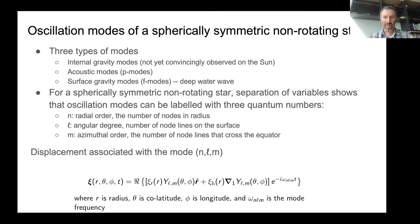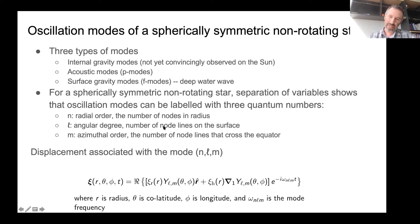If you go through the math, you find that oscillation modes can be labeled with three quantum numbers: N, the radial order (the number of nodes in radius); L, the angular degree (the number of node lines on the surface); and M, the azimuthal order (the number of node lines that cross the equator). You can write down the displacement associated with a particular mode in terms of spherical harmonics, which tells you the latitude and longitude dependence of scalar quantities and also the radial displacement. These are spheroidal modes — they don't have any radial vorticity.